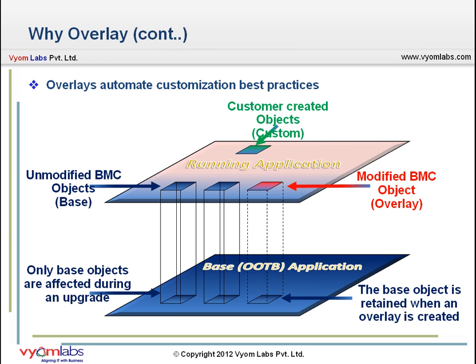What you are looking at is a diagram of a base application and an overlaid application running on top of it. The best practice customization mode has three types of objects: base objects (unmodified), custom objects, and overlay objects. Here we can see some unmodified BMC objects, some modified BMC objects, and some custom-created objects. Custom objects are not modified during upgrades, and base objects are retained when overlays are created.